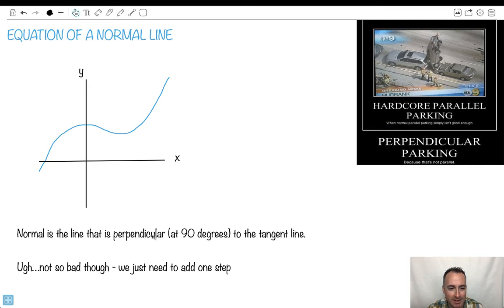If a line, sorry, a normal line is perpendicular to a tangent line. So for example if we have a tangent line going like this, then a normal line is perpendicular to it. It's 90 degrees to it. This is how we would draw something like this, something that's 90 degrees.